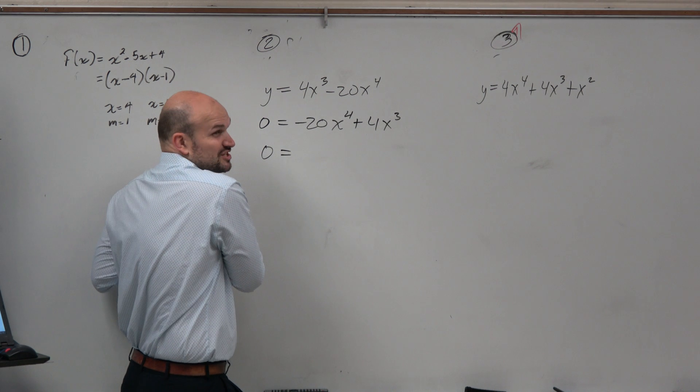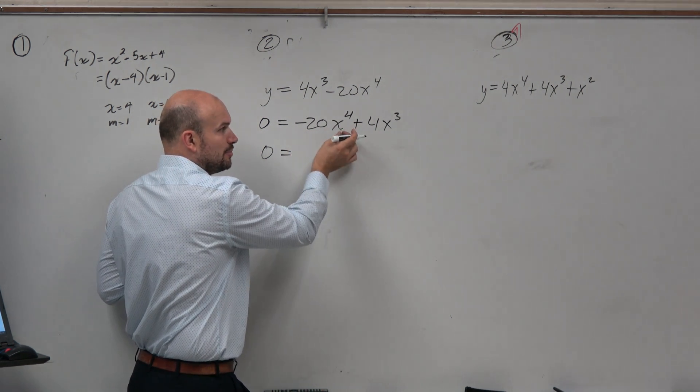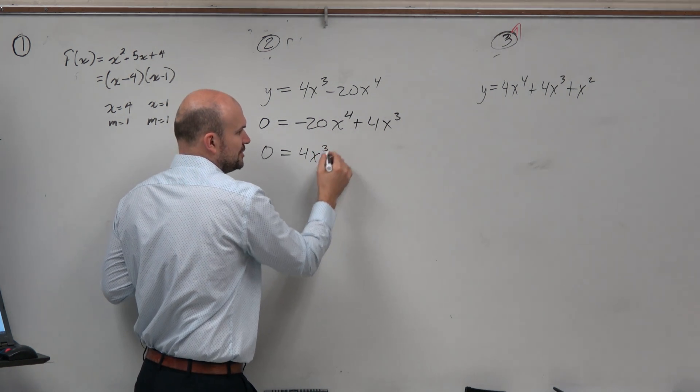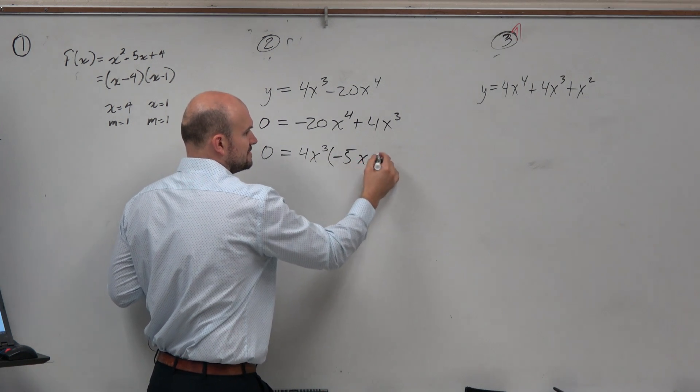So again, greatest common factor is just what they have in common. You can see that they're both divisible by 4 and they're both divisible by x cubed. So I'm going to factor out a 4x cubed. When I do that, I get a negative 5x plus 1.